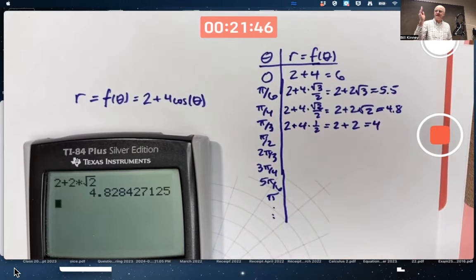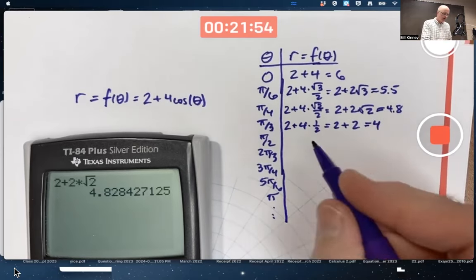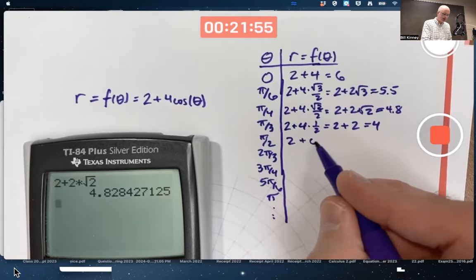Pi over 2 is 90 degrees. First coordinate of the topmost point in the unit circle is 0. Cosine of pi over 2 is 0. 2 plus 4 times 0 is 2.